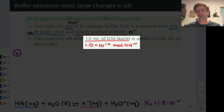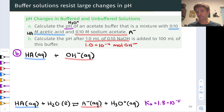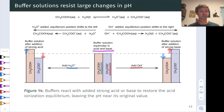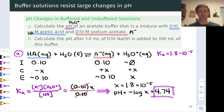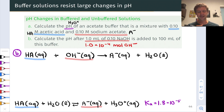Calculating 1.0 mL × 0.10 mol/L gives 1.0 × 10⁻⁴ mol of hydroxide being added. That hydroxide will react with the acidic component HA to produce more A⁻ and liquid water, which we ignore. So HA is consumed and A⁻ is produced. This is straightforward stoichiometry — a limiting reactant problem where hydroxide is the limiting reagent.